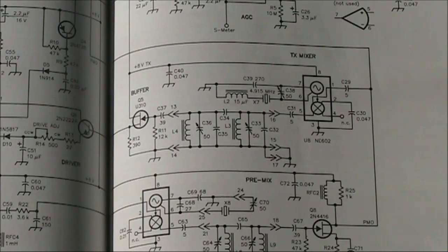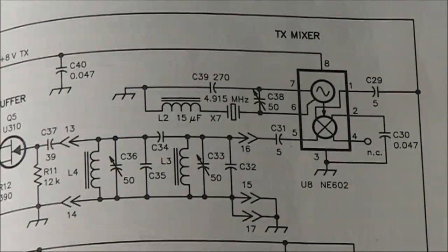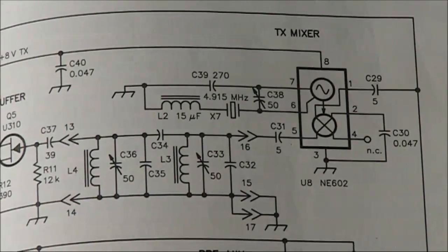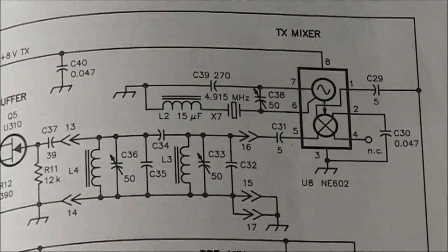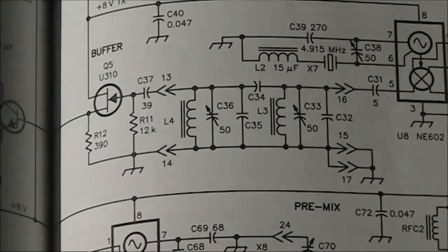I'll just go through some of the important stages in the transmitter section. This is the transmit mixer using an NE602, and in their case, a 4.915 meg crystal. The bandpass filter, which cleans up the signal.